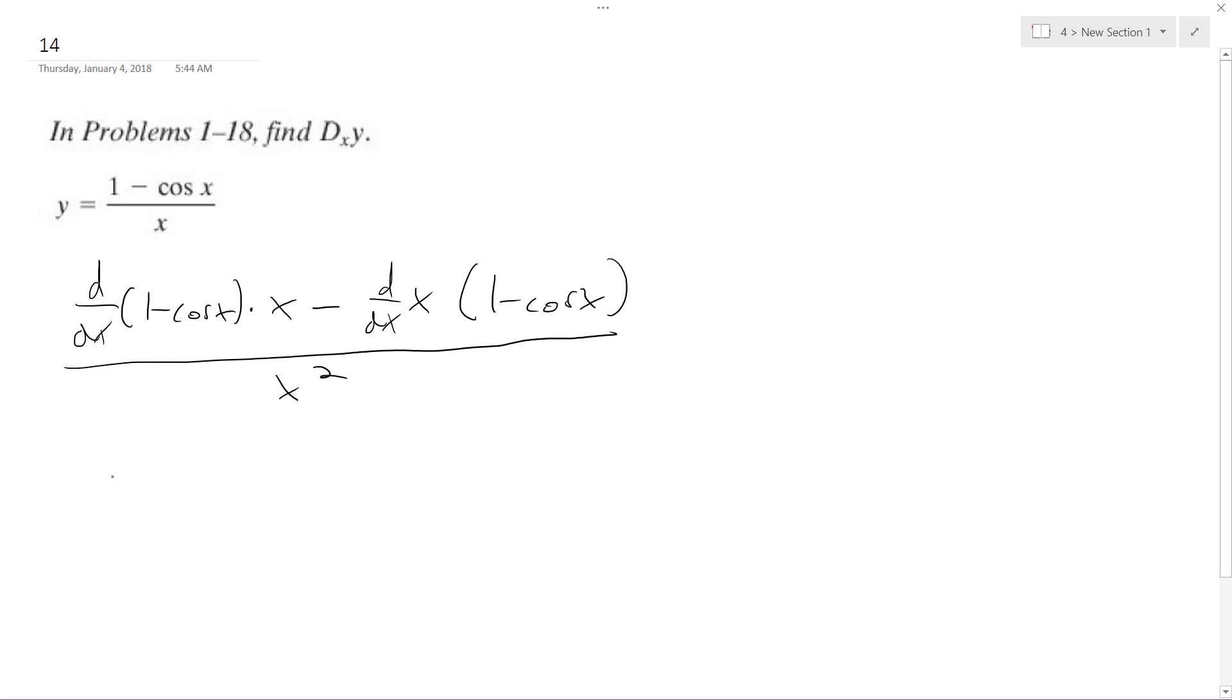So what I end up with here is 0, derivative of 1 is 0, and then derivative of negative cosine x is minus negative sine, which is plus sine of x.